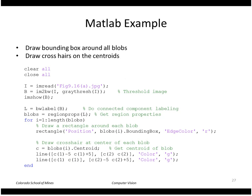Here's an example where we'll draw a bounding box around all the blobs and crosshairs on the centroids. We'll read in the image, threshold it, do labeling, and extract region properties using regionprops. Then we'll loop through each blob and draw a rectangle around its bounding box — we simply pass in the bounding box directly because that's exactly the format the rectangle function expects.